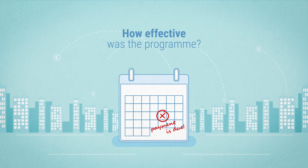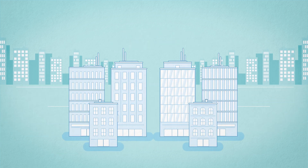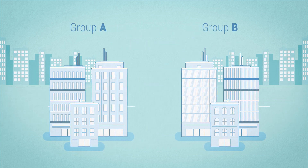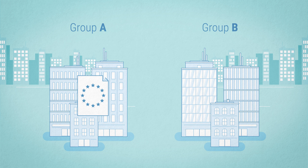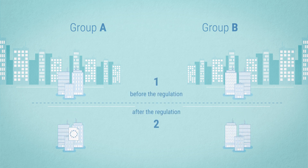How do we know that the regulation was effective? Assume we have access to data for two groups of firms, where one of the groups, Group A, was exposed to the regulation, while the second one, Group B, was not. Assume also that both groups are observed for two time periods, one and two — one before and one after the introduction of the regulation.